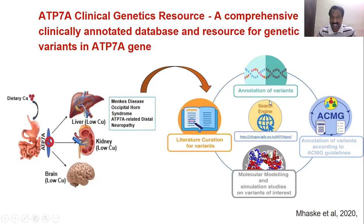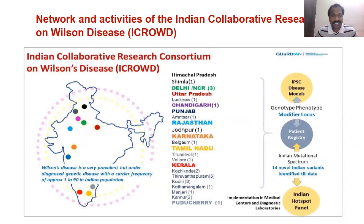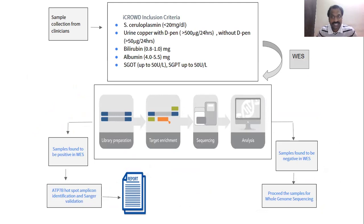Coming to the consortium — as mentioned, India lacks pan-India epidemiological data for Wilson disease. Here at IGIB, we started a consortium called the Indian Collaborative Research Consortium on Wilson Disease (iCROD), part of the Guardian Consortium, containing 22 clinical centers across India. When a clinician receives a Wilson disease patient, they send the sample to us. We perform whole exome sequencing, and if we find a mutation, we send the report back to the clinician. If no mutation is found, we proceed to whole genome sequencing.